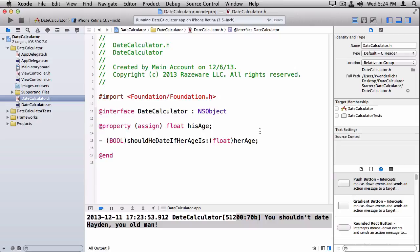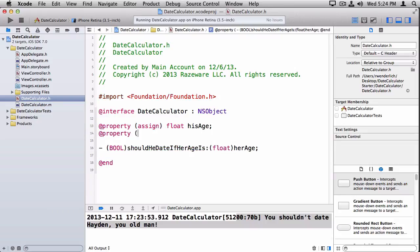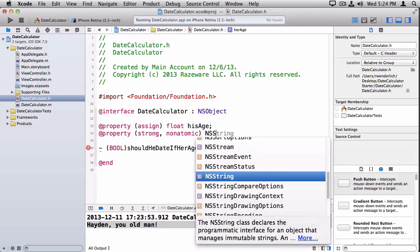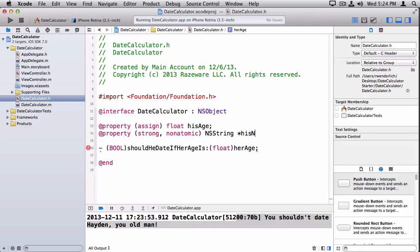Now let me show you, just for fun, how to add one more property. So we're going to make another property, and this time we're going to store, so far we're storing his age, why don't we store his name too? And we want to use a string, so that's going to be an object, so we have to choose strong or weak. So we want strong because we want the name to stick around as long as this object is alive. So strong, and we'll put nonatomic because we don't have any multi-threading going on, and we'll call this his name.